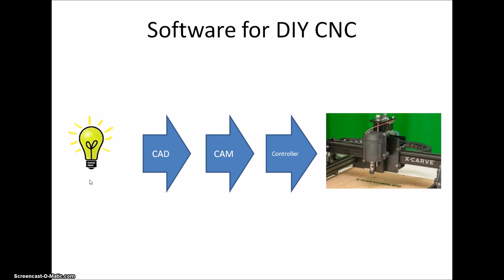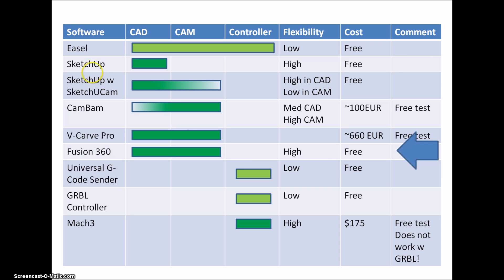In an earlier video I walked through the programs I've been using to go from an idea through CAD, CAM, and a controller program to download the G-code to the CNC machine. Via a comment I was made aware of Fusion 360 as an option for a combination of CAD and CAM, and in this video I will go through some of my early experiences with that program.